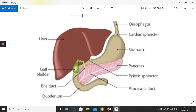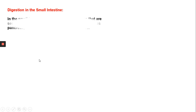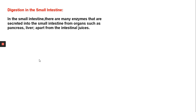The liver secretes bile juice, which is stored in the gallbladder. The pancreas secretes pancreatic juice, which contains various types of enzymes that help in the digestion of nutrients in the food. In the small intestine, many enzymes are secreted from organs such as the pancreas and liver, apart from the intestinal juices. The small intestine itself also acts as a gland, secreting some digestive juices.